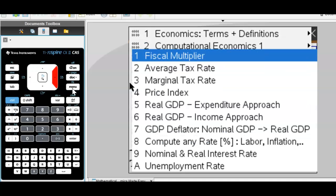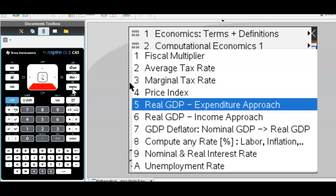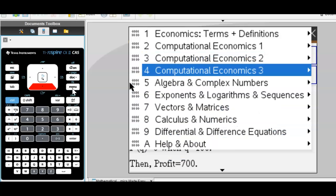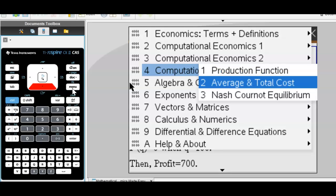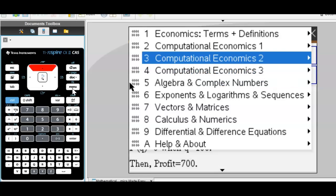Here in my second tab, or third tab: fiscal multipliers, average tax rate, marginal tax rate, GDP, and more. The sky is the limit here: Nash equilibrium, average and total cost, production functions. Everything here at your fingertips.